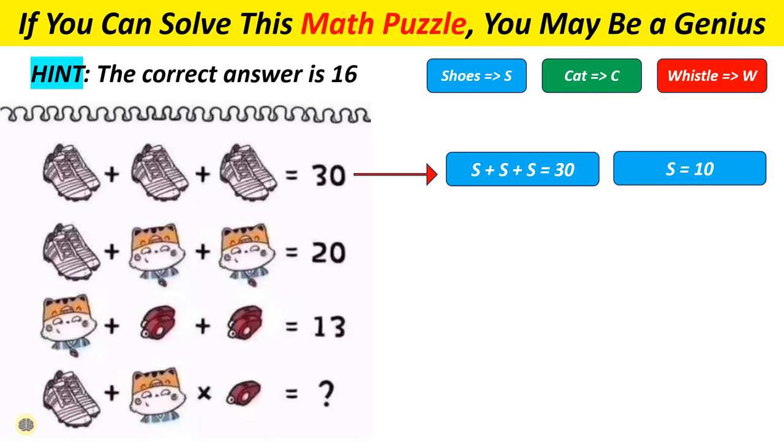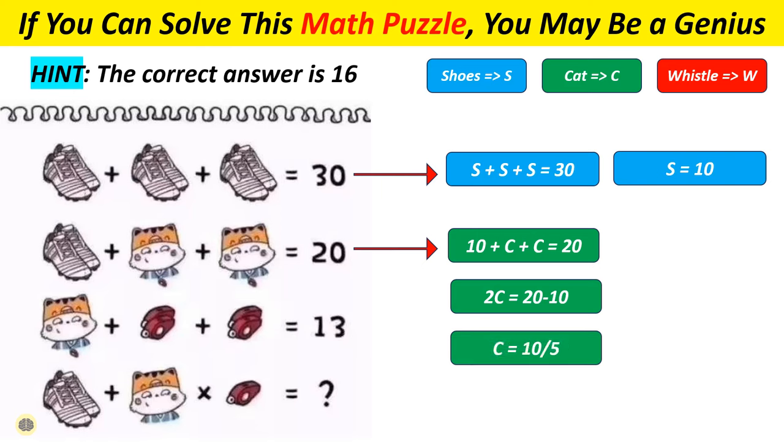Now the second equation is clearer. Substitute the shoes out for a 10 and you'll find out 10 plus C plus C equals 20. Subtract 10 from each side. So C plus C equals 10. Each cat must represent the number 5.